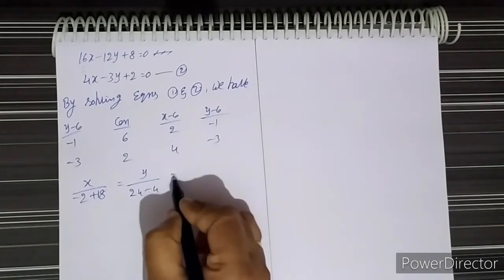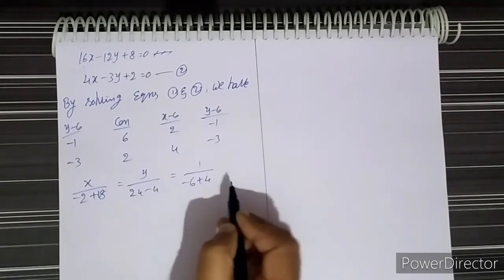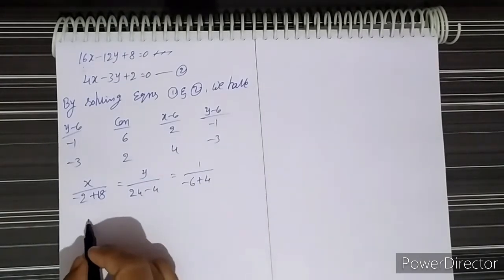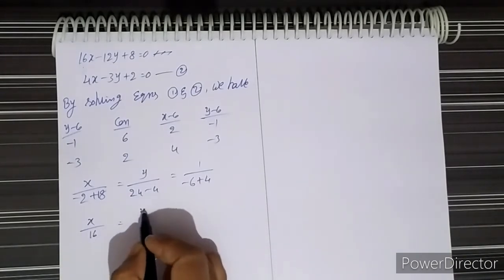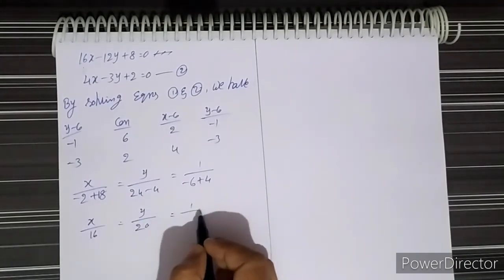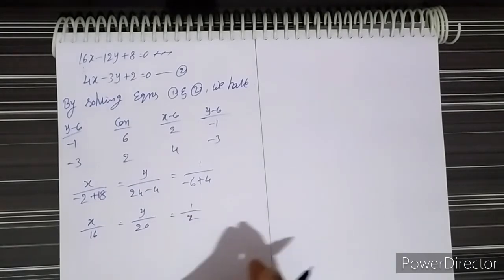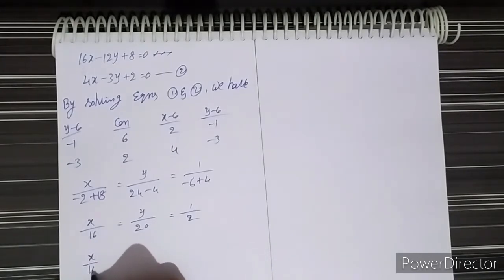Setting up the cross-multiplication: x / ((-1)(2) - (-3)(6)) = y / ((6)(4) - (2)(2)) = 1 / ((2)(-3) - (4)(-1)), which gives x/16 = y/20 = 1/2.